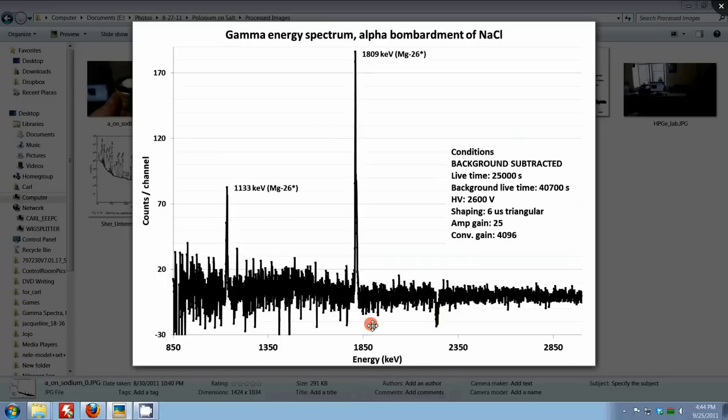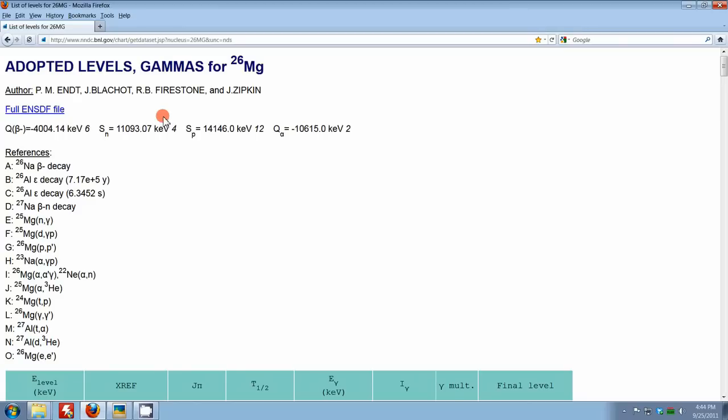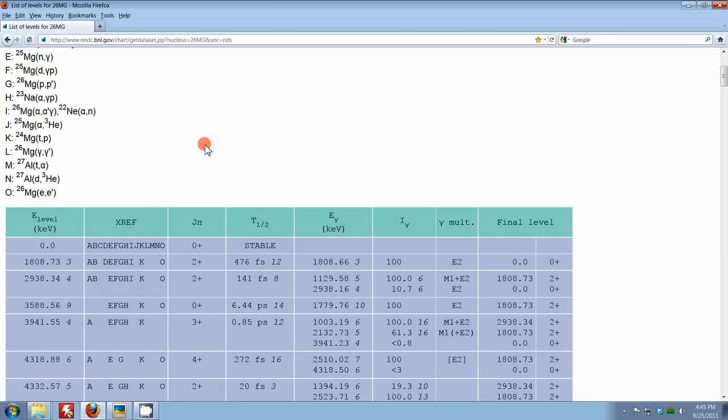But let's now take a look at a website here from the National Nuclear Data Center. Anybody can look up any of these data for any nuclide of interest. These are energy levels and gamma rays for magnesium-26, which we just made. Here is that 1809 keV gamma ray that we're observing. And it's associated with the first excited state of the nucleus. It decays with this, as I said earlier, an electric quadrupole multipolarity, emitting that 1809 keV gamma ray. And this is the half-life. This is the half-life of that excited state. 476 femtoseconds. Very short.